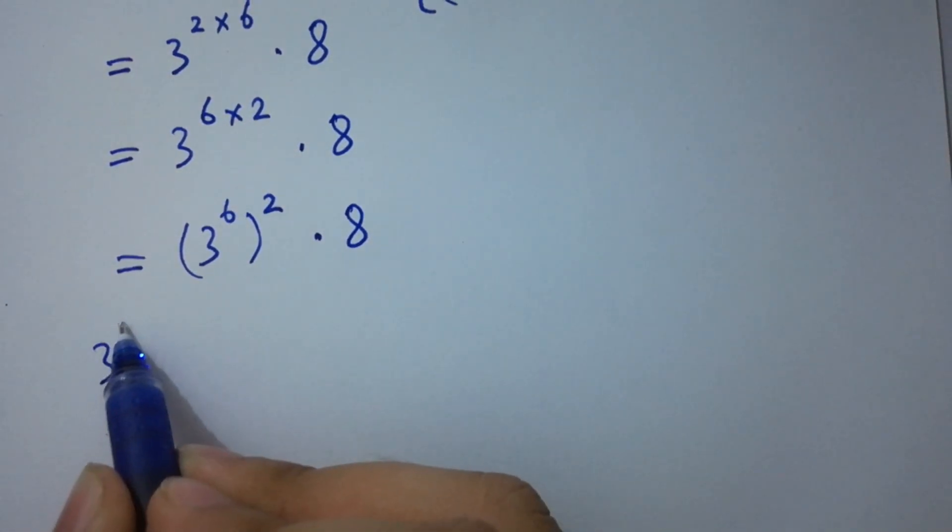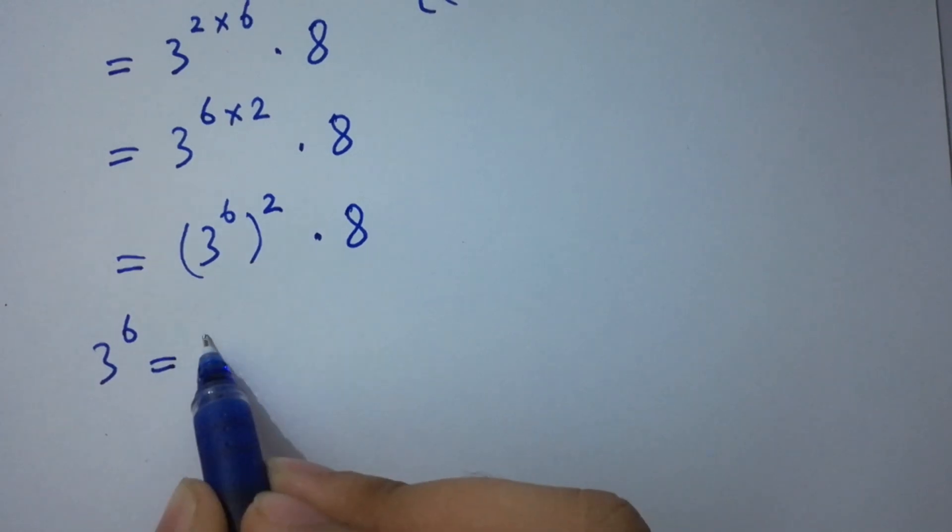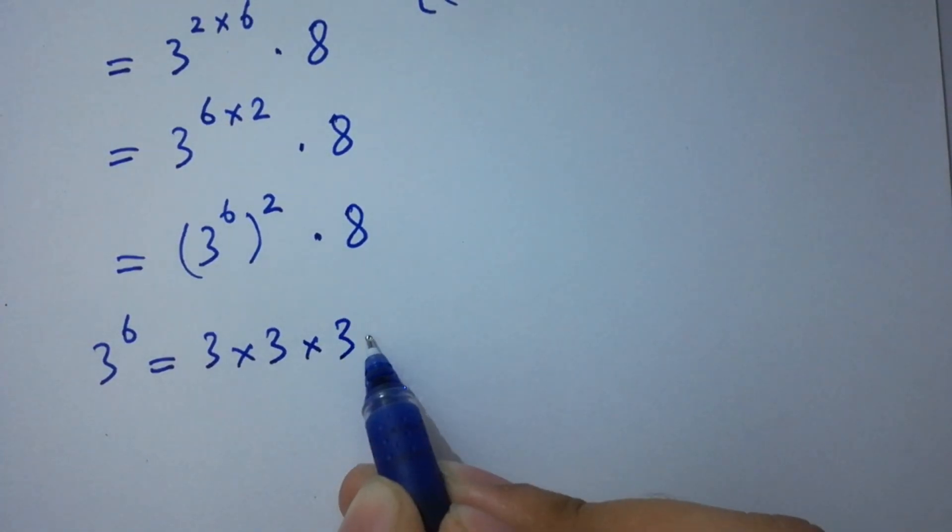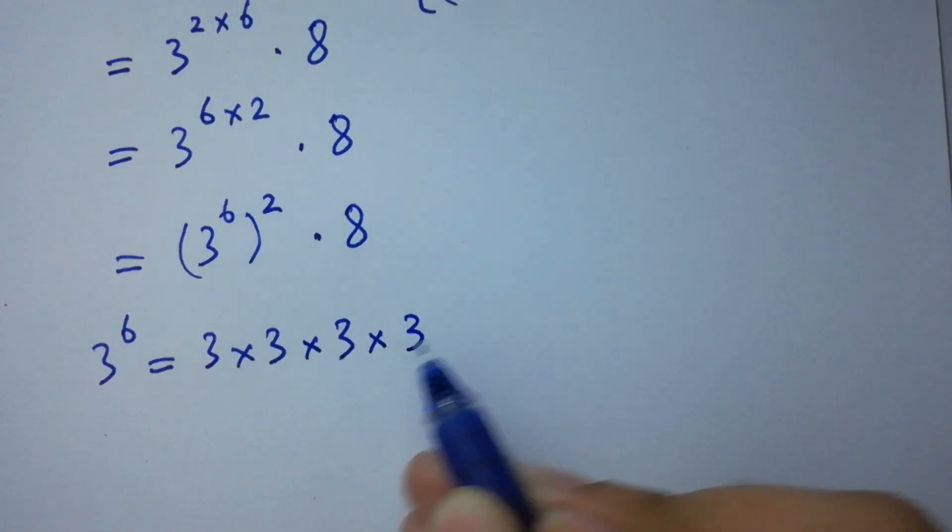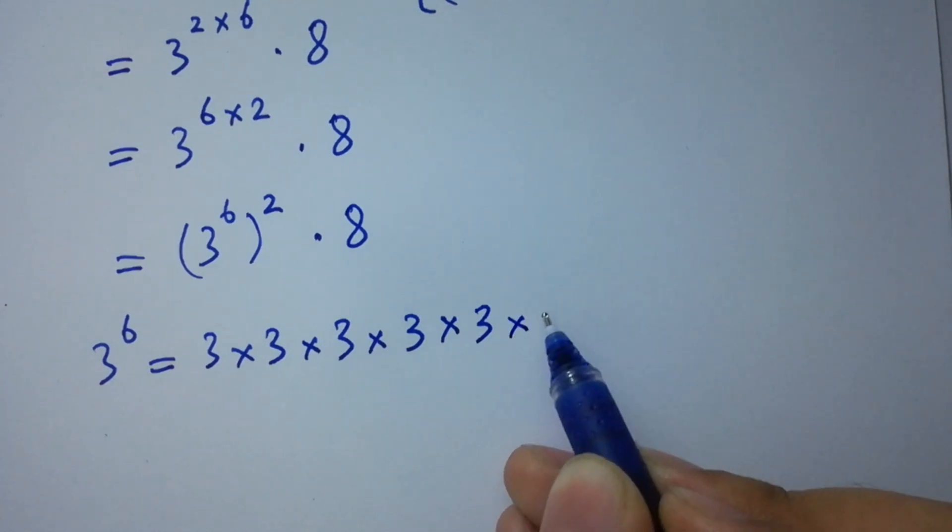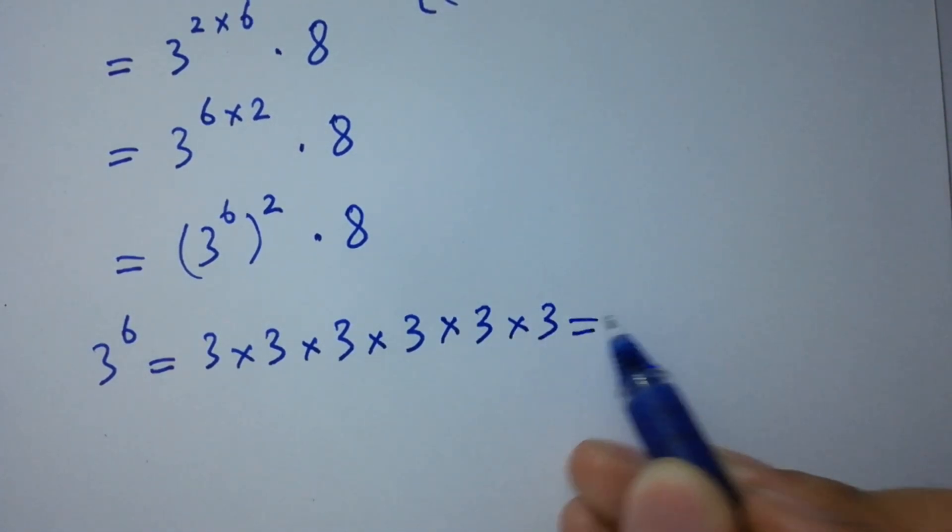So, 3 to the power 6 equal to 3 times 3 is 9, 9 times 3 is 27, 27 times 3 is 81, 81 times 3 is 243, and 243 times 3 is 729.